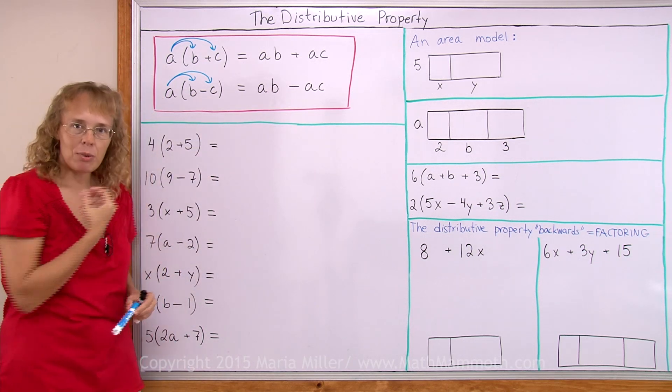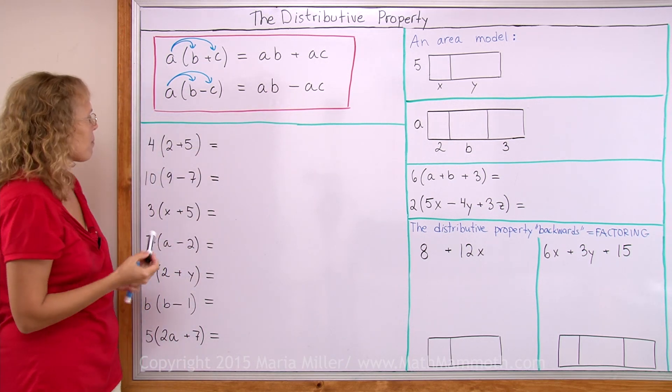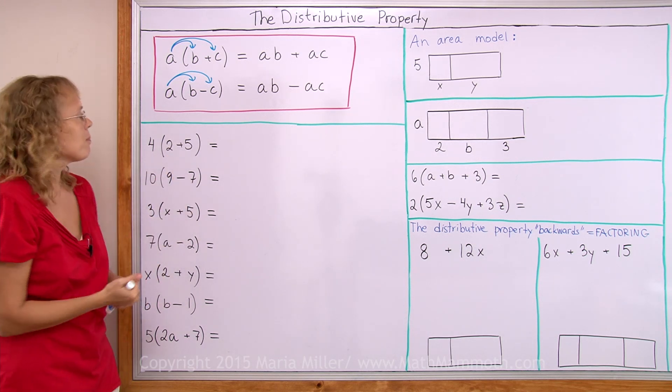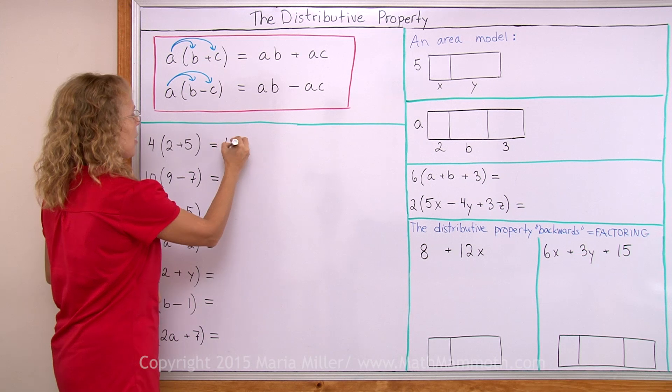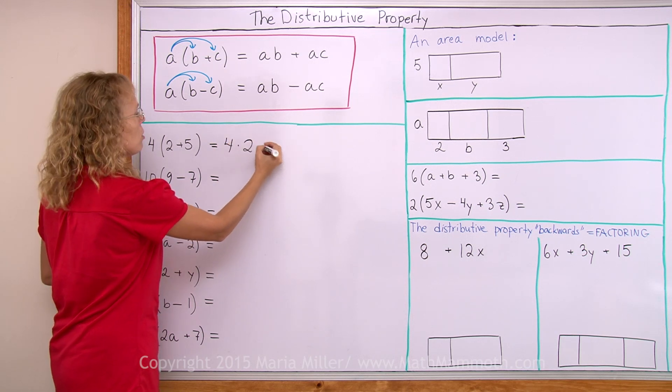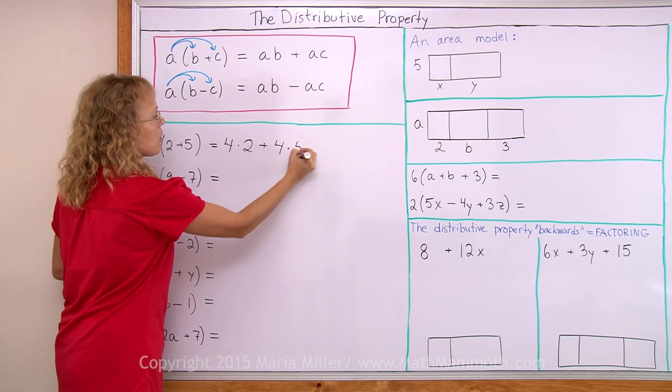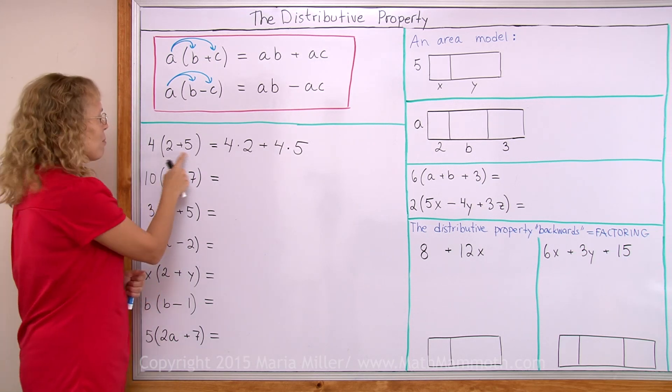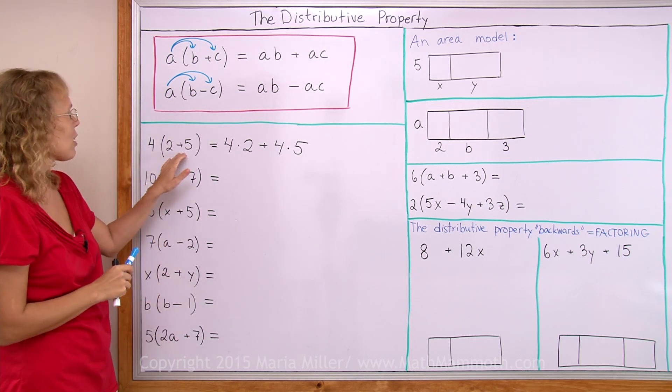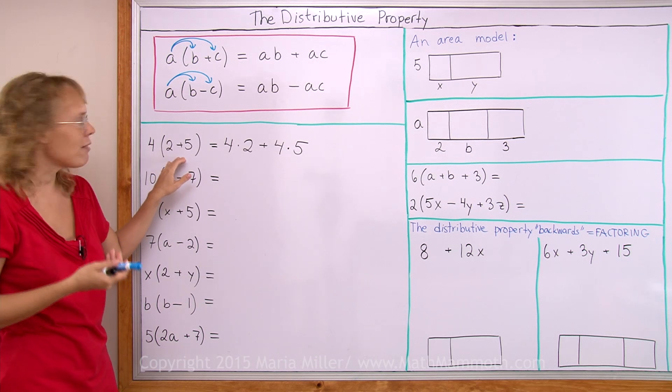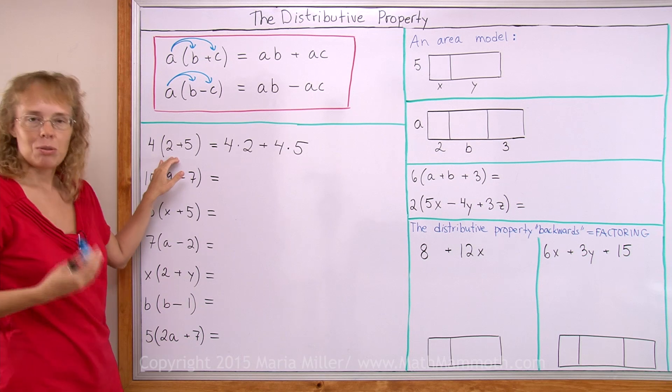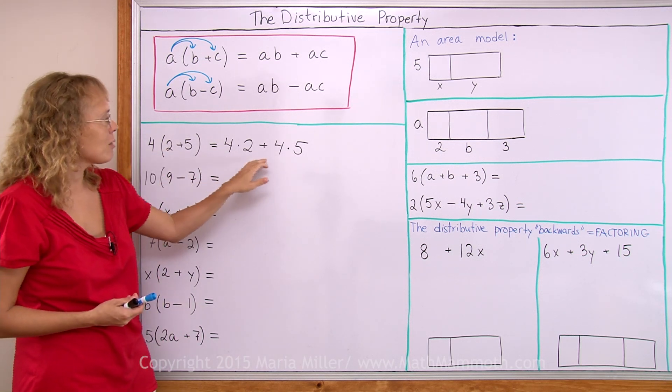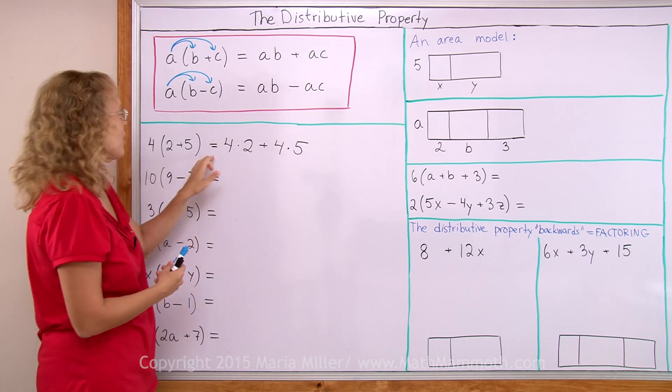Let me show you with plain numbers how it works. If you have 4 times 2 plus 5, that is equal to 4 times 2 plus 4 times 5. Now of course when you just have numbers here, it is actually easier to calculate: 2 plus 5 equals 7 and 4 times 7 is 28. But this is also true - 28 here and here you have 8 plus 20, so it is equal.